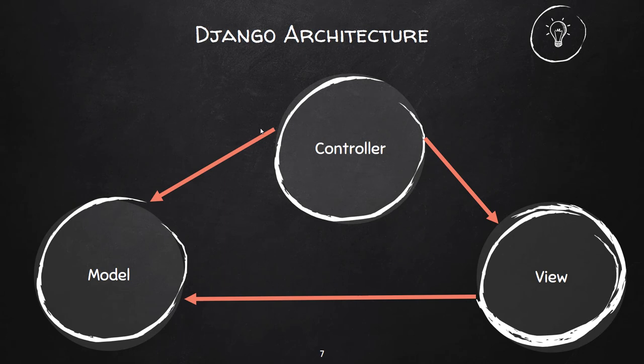Now the most important part we'll be talking about today is the Django architecture. Django actually uses MVT — Model View Template. What you're seeing on screen is MVC — Model View Controller. The MVC pattern is actually built inside the Model View Template. So before we can talk about Model View Template, we have to talk about Model View Controller. In the architecture, the MVC pattern uses the terminology 'template' for views and 'views' for controller.